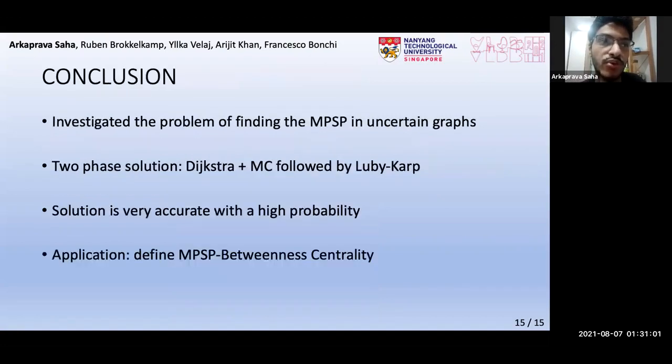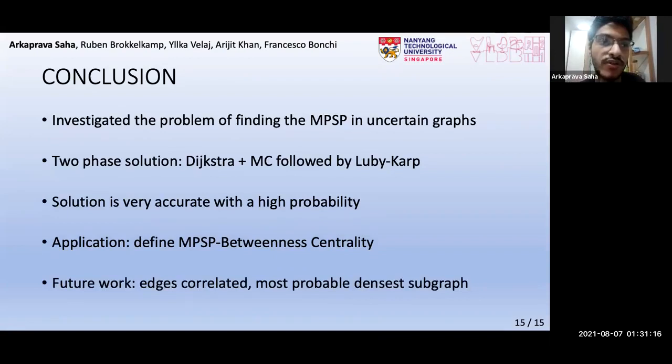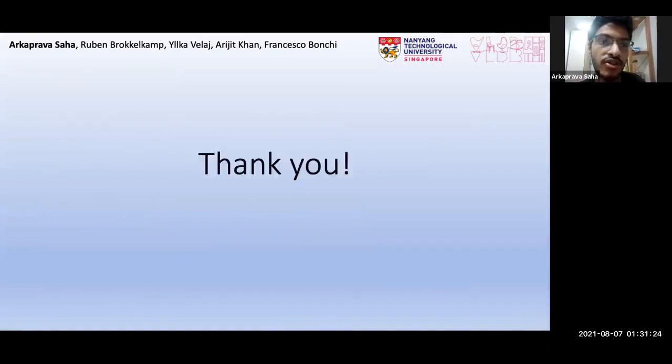So to conclude, we demonstrated a two-phase solution for finding the MPSP in uncertain graphs, which returns a very accurate solution with a high probability. We used it to define a novel betweenness centrality in uncertain graphs. Now in the future, it would be interesting to consider graphs where edge probabilities are correlated or maybe define the most probable densest subgraph in uncertain graphs. Thank you.